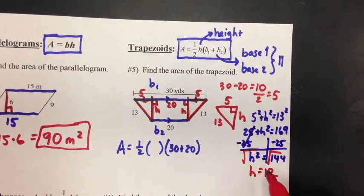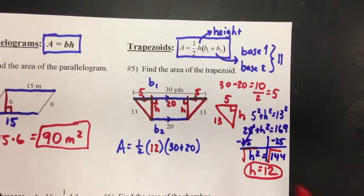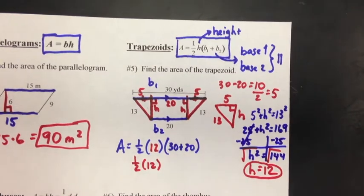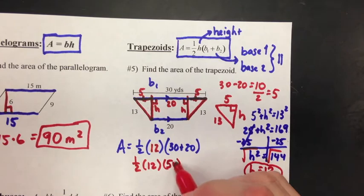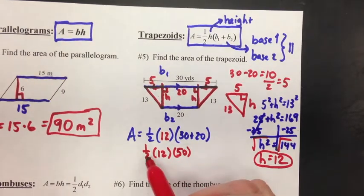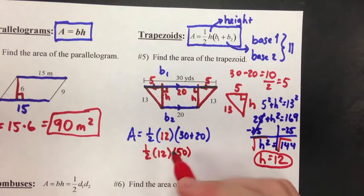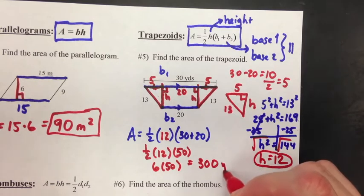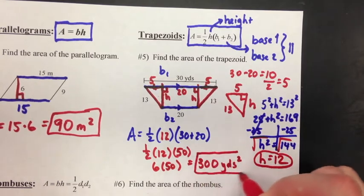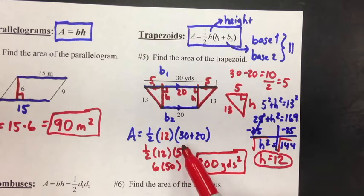And we're still not done — we have to find the area, so we need to plug that in. H is 12. That's one-half times 12, and then 30 plus 20 — I can add that — that's 50. Half of 12 is 6, and 6 times 50 is 300. This is an area, so it's yards squared. That's a good problem — you had to do a lot of stuff just to get to the formula for area. You have to go piece by piece. If you don't know the height, you have to find the height and ask yourself what they give you and how you can get what you need.